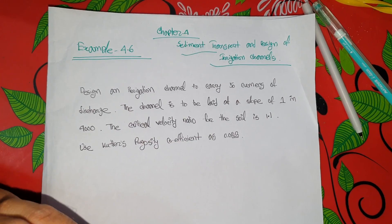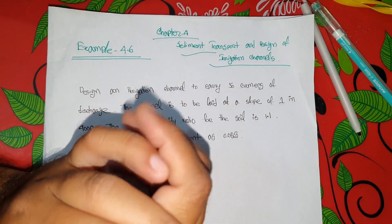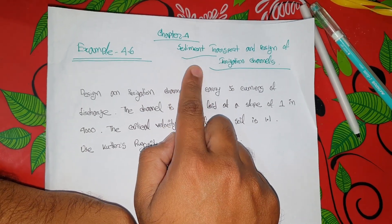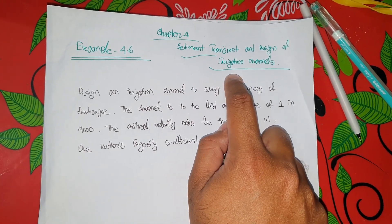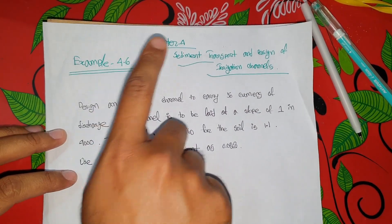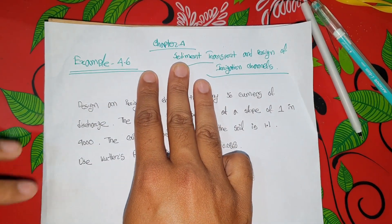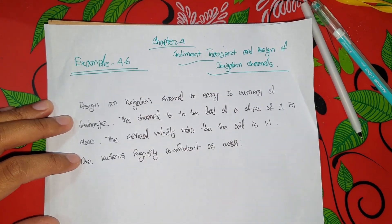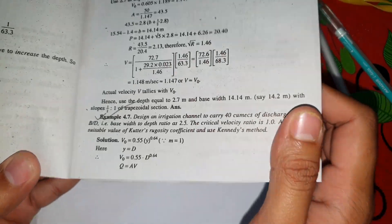Hello everyone. Today we are coming to chapter 4, which asks the name sediment transport and design of irrigation channels. This chapter is part of the math method, and we will know chapter 5 as well — this is the only math method.